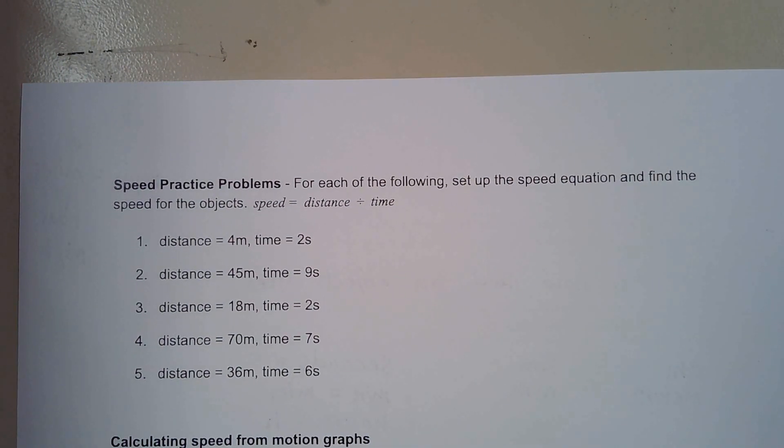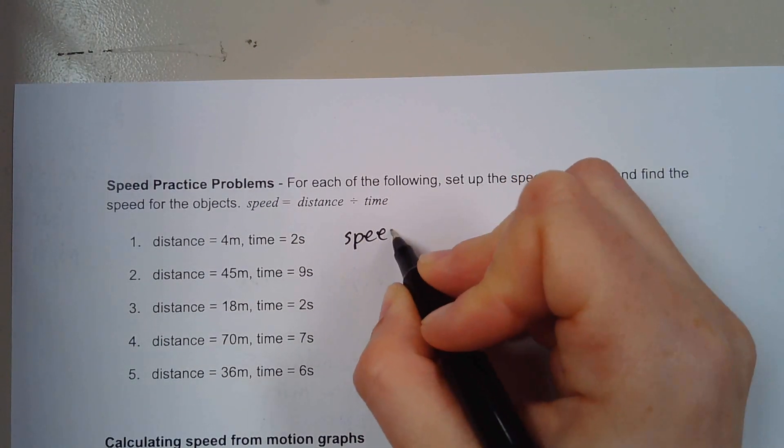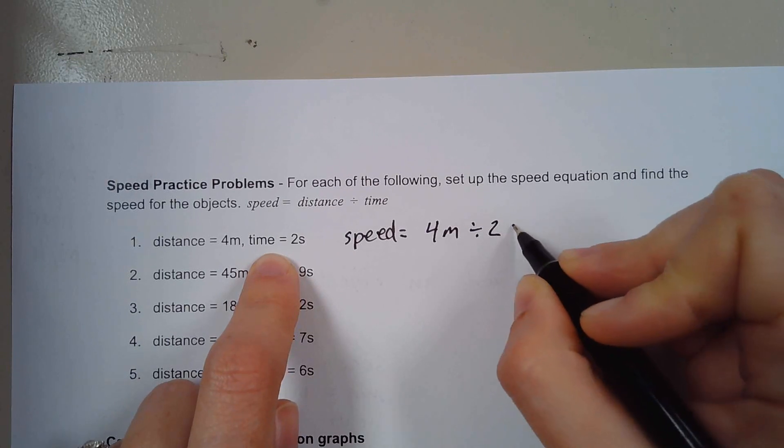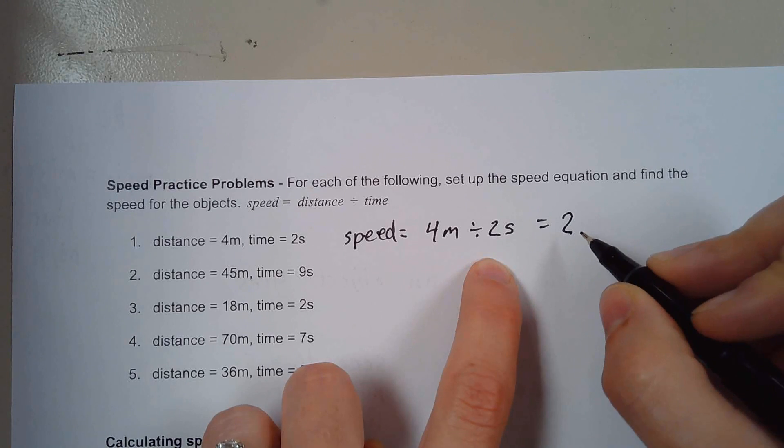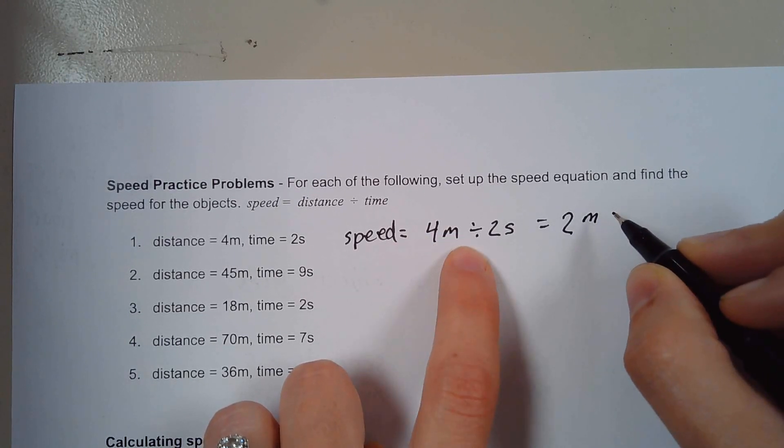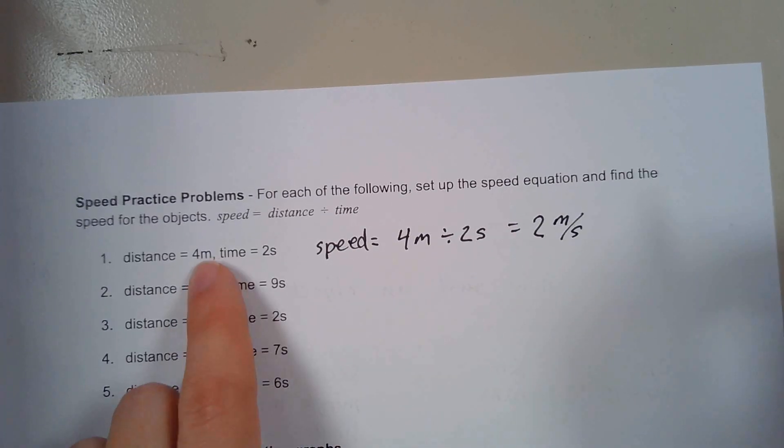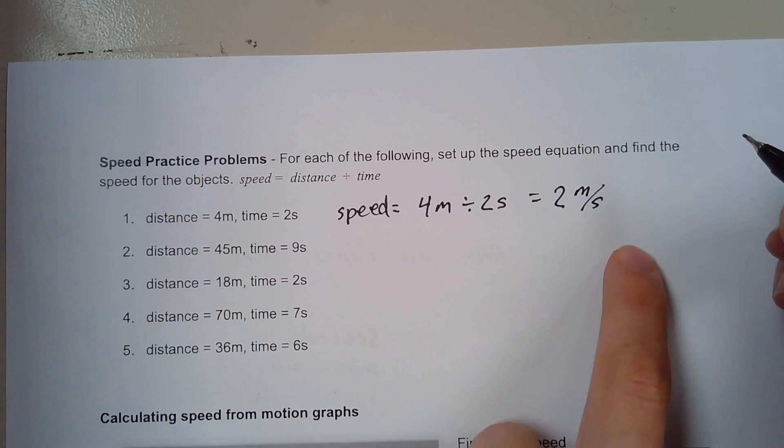Here are some examples that we can look at. Speed practice problems. For each of these, you can do speed equals the distance, four meters, divided by the time, two seconds. Four divided by two, you divide the numbers and your unit is meters, and then that is per second. So an object that goes four meters in two seconds, its average speed is two meters per second.